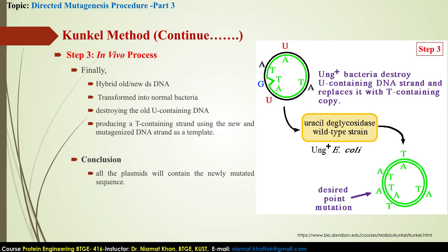In the last step, the hybrid molecule is transformed into a normal or wild-type strain of E. coli. Remember that in step 1 we used a special mutant strain of E. coli. Here in the last step, as the hybrid molecule enters the wild-type E. coli, the bacterial repair mechanism starts degradation of the uracil-containing strand because it is unnatural, while at the same time the bacterial replication mechanism synthesizes the other strand. After completion of the second strand, both strands of DNA contain the desired mutation. Further amplification through semi-conservative replication results in all new molecules carrying the desired mutation.